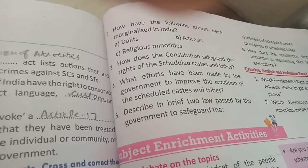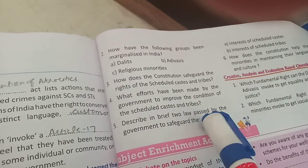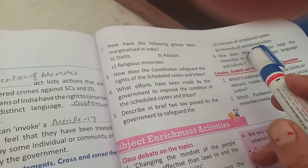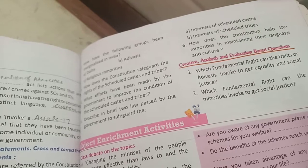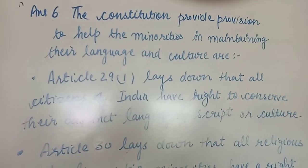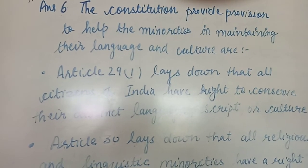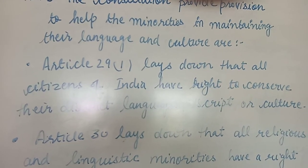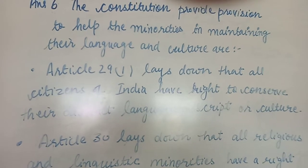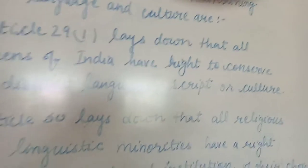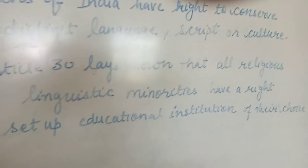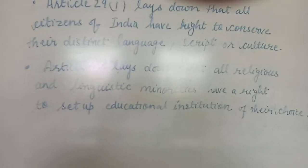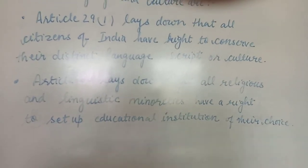The fifth question on brief laws to safeguard SC/ST interests — we have already covered that in previous questions, so there is no need to repeat. The sixth question: how does the Constitution help minorities maintain their language and culture? The Constitution provides provisions to help minorities maintain their language and culture.